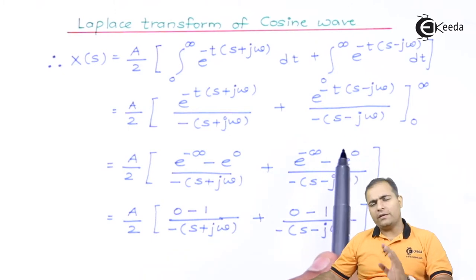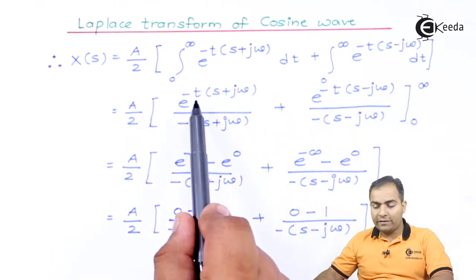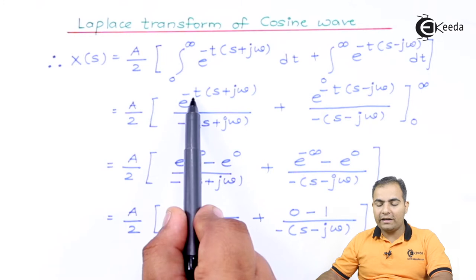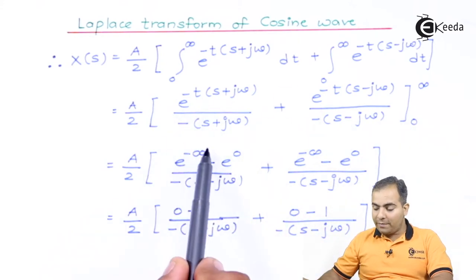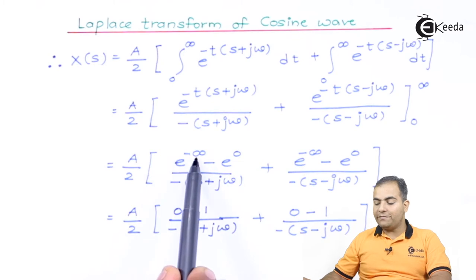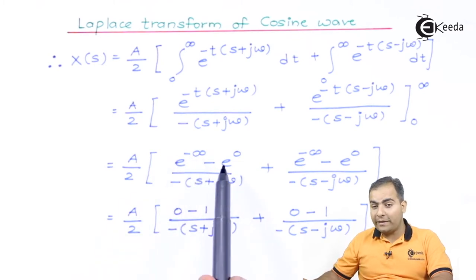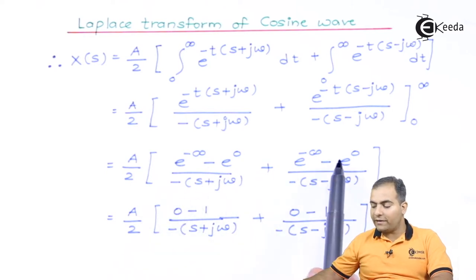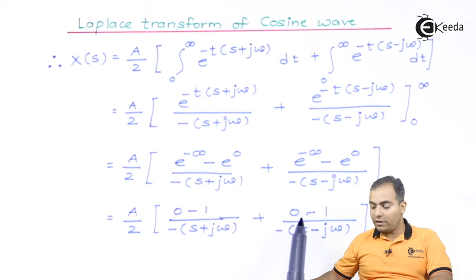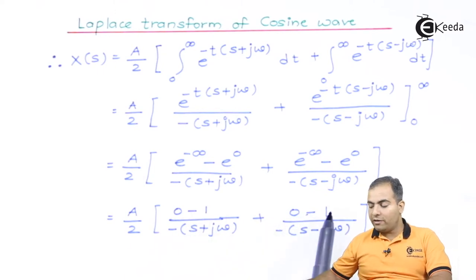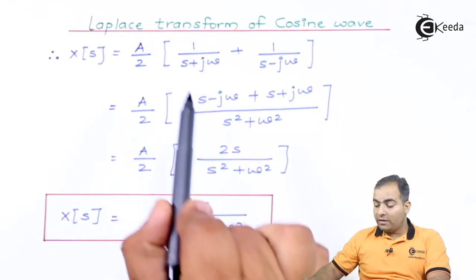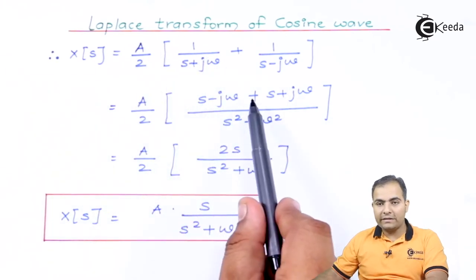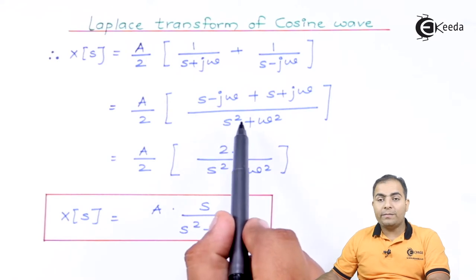Now substitute the limits: upper limit first, then lower limit. Substituting the upper limit t = ∞ gives e^(−∞) = 0, and substituting the lower limit t = 0 gives e^0 = 1. The minus–minus signs cancel, and what remains is 1/(s + jω) + 1/(s − jω). Now cross-multiplying these two values gives (s − jω + s + jω) / (s² + ω²).